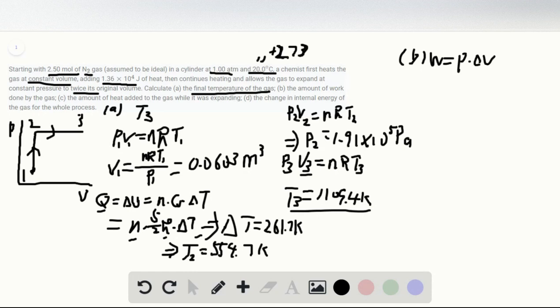The work is simply P times delta V, because this is constant pressure. P is constant, and P is 1.91 times 10 to the fifth Pascal. V3 equals 2 times V1, and V2 is the same as V1, so delta V equals 2V1 minus V1, which equals V1. This P equals P2. Plugging in the numbers, the work equals 1.15 times 10 to the fourth joules.